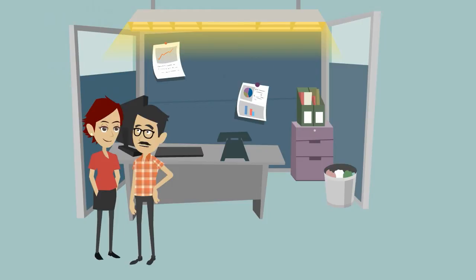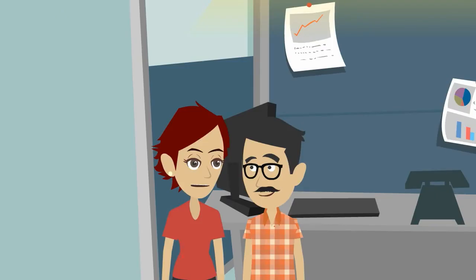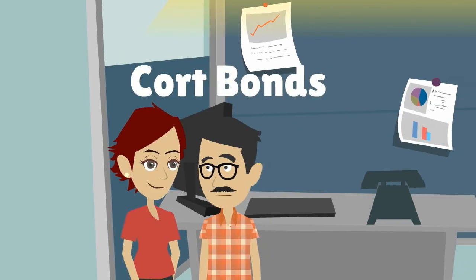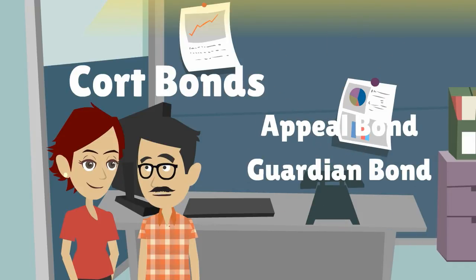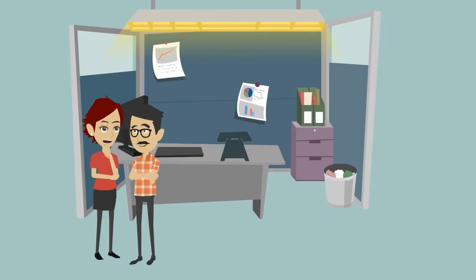Thanks John, now I know what contract and license bonds are. What about court bonds? Court bonds guarantee that the fiduciary will fulfill his or her responsibilities as ordered by the law or the court. There are a few types of court bonds such as appeal bonds, guardian bonds, and probate bonds.